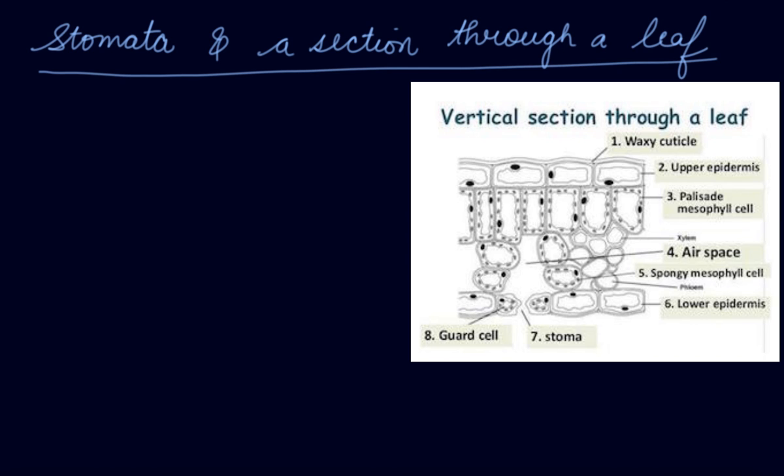The leaves of the plant help to prepare the food. So one section of the leaf is stomata that we have studied. Now let's see the vertical section through a leaf and how the leaf looks like from inside.